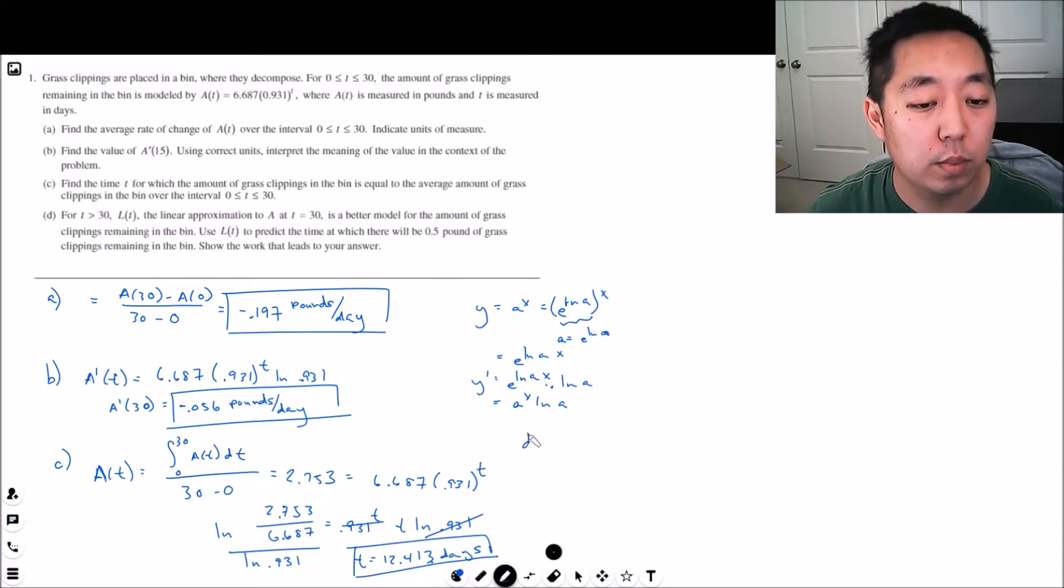Part D: For t greater than 30, L(t) is a linear approximation to A at t equals 30. Is it a better model for the amount of grass clippings remaining in the bin? Use L(t) to predict the time at which there will be 0.5 pounds of grass. So let's do the linear approximation first.